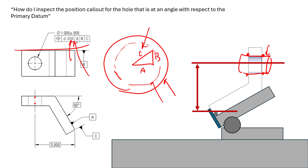That best-fit gauge pin gives us the UAME — the unrelated actual mating envelope cylinder — and we measure off that cylinder to create a theoretical axis. We dive into this in all of our courses; specifically in Fundamentals we show how to interpret position feature control frames and calculate diametric deviations, and in our Inspection course we show setups like this and how to produce reportable values to pass or fail a feature. Thanks for joining us — hopefully this clarified things!